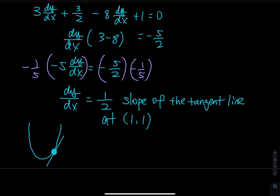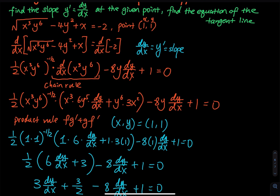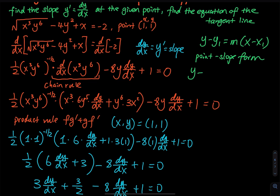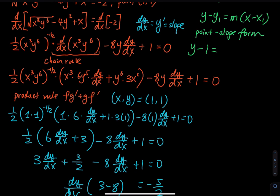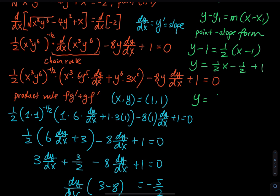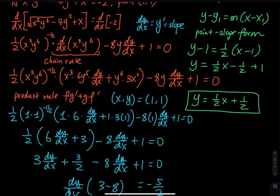To find the equation of the tangent line, use point-slope form: y minus y₁ equals slope times (x minus x₁). With x₁ = 1, y₁ = 1, and slope = one-half, we get y minus 1 equals one-half times (x minus 1). Expanding: y equals one-half·x minus one-half plus one, which simplifies to y equals one-half·x plus one-half.